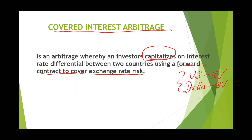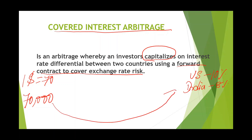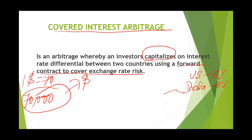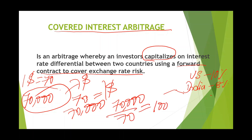Let us take an example to understand. An investor wants to invest 70,000 rupees. The spot market rate is 70 rupees per dollar. If the investor invests in India at 8% for one year, he will get 75,600 rupees. Now, for the same amount invested in the US, he first needs to convert rupees into dollars. At 70 rupees per dollar, 70,000 rupees gives him 1,000 dollars.